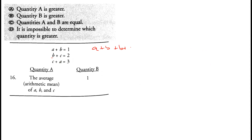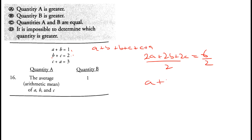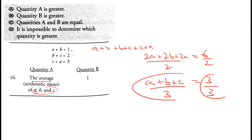Question 16: Given a plus b, b plus c, and c plus a. Adding all three: 2a plus 2b plus 2c equals 1 plus 2 plus 3, which is 6. Dividing by 2 gives a plus b plus c equals 3. The average of a, b, and c is 3 divided by 3, which equals 1. Option C is correct.